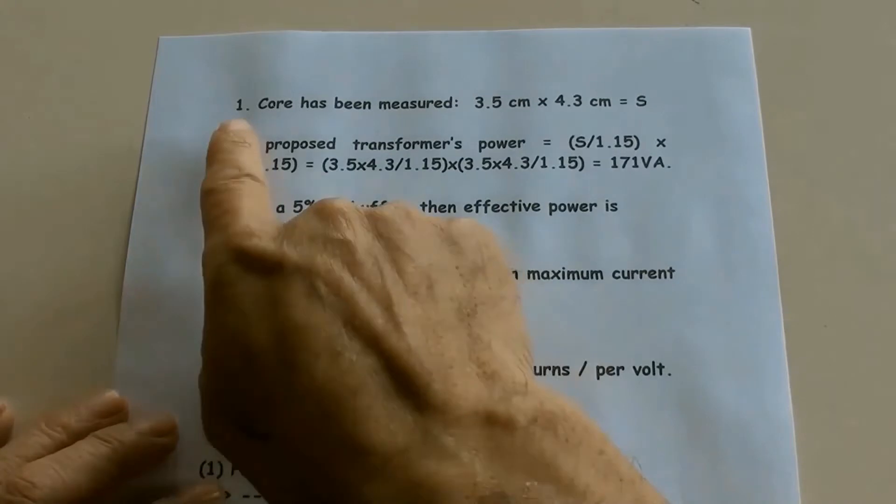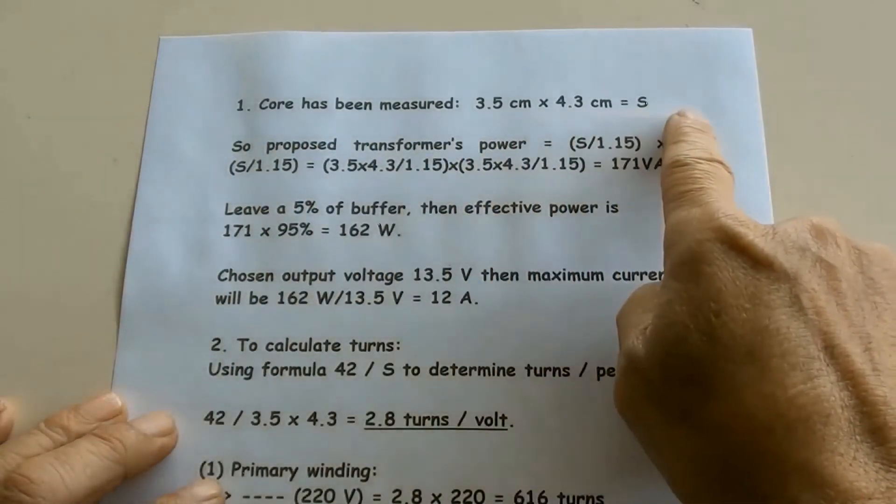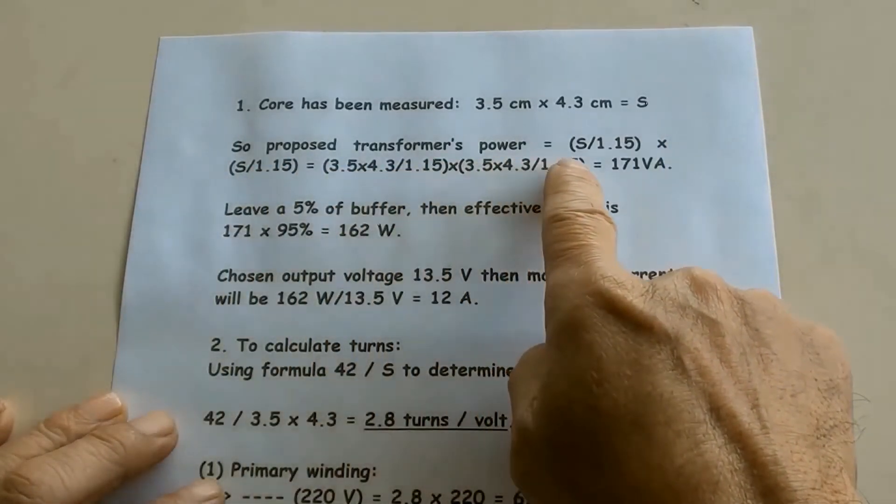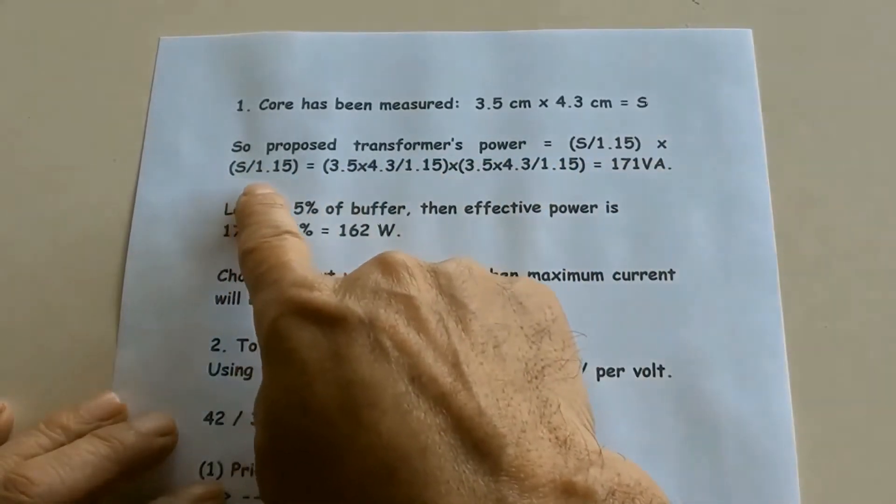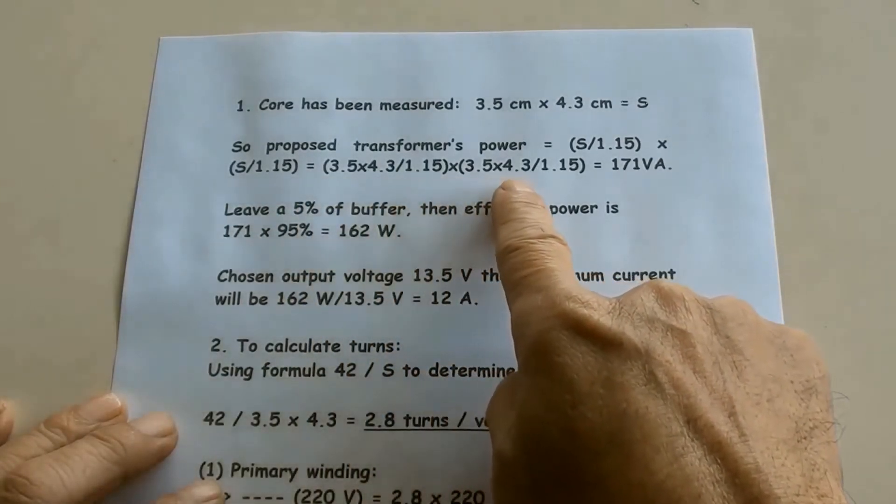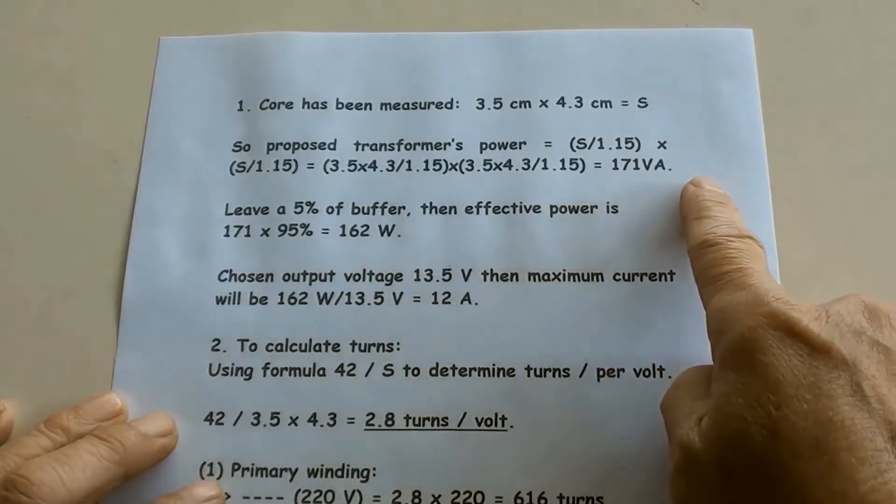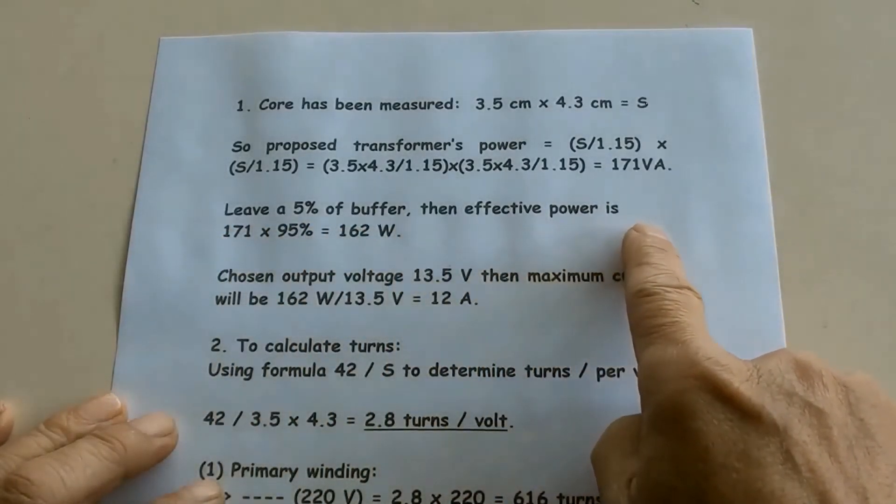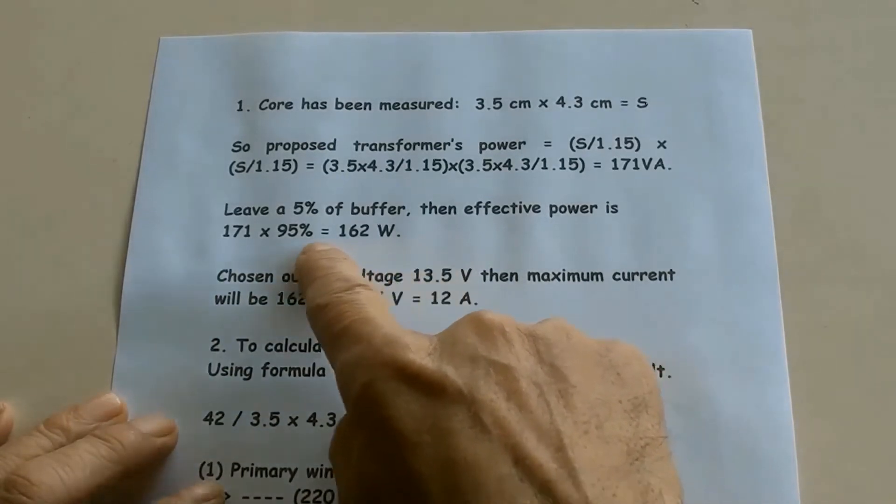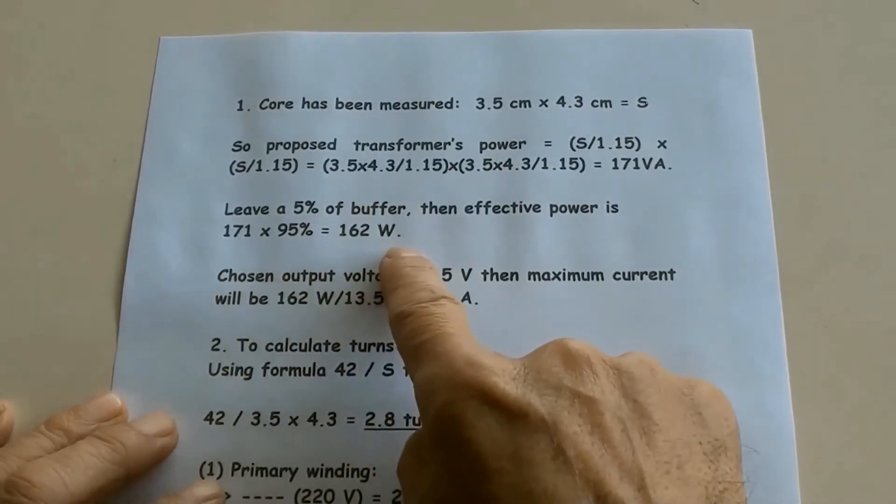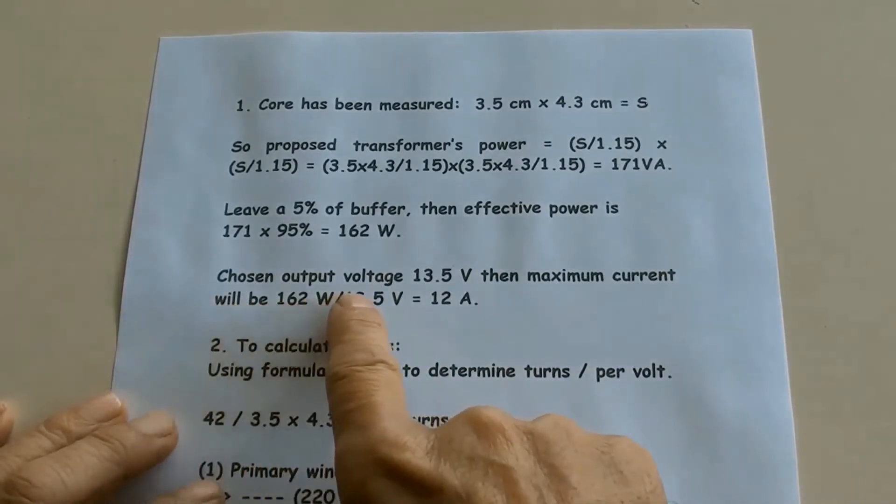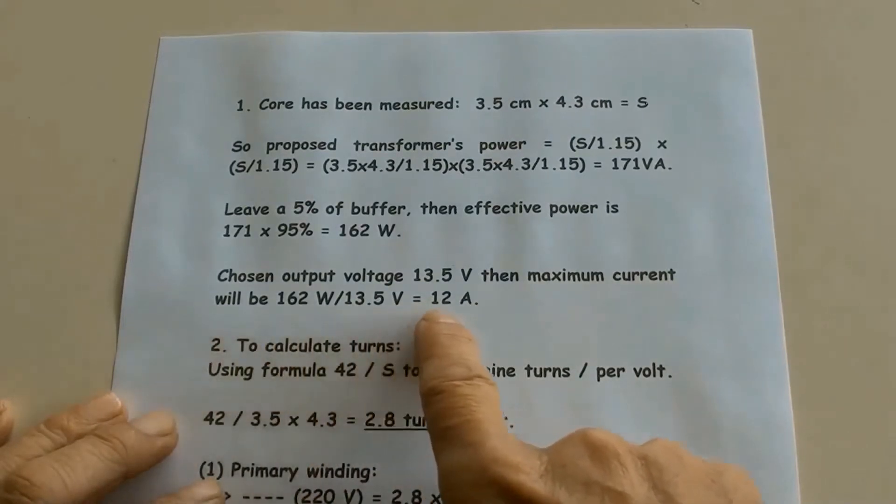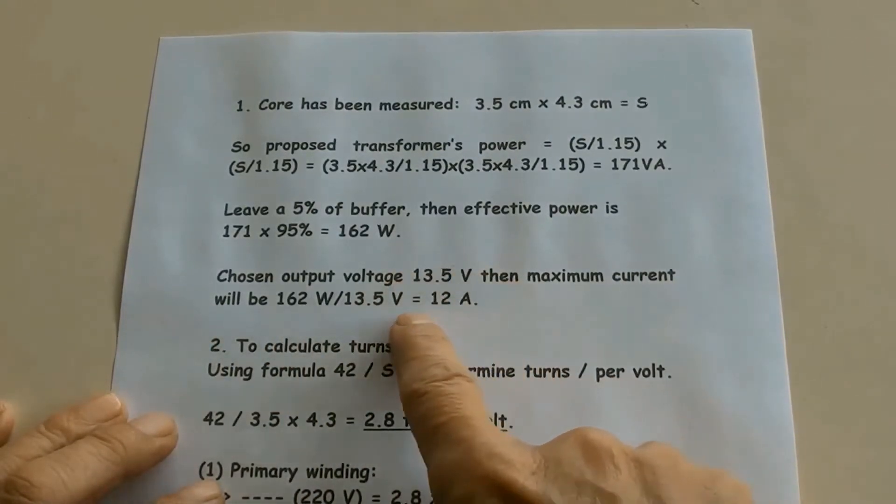The core size was measured: 4.3 cm times 3.5 cm equals S, which represents core area in square centimeter. S over 1.15 square equals 3.5 times 4.3 over 1.15 times 3.5 times 4.3 over 1.15 equals 171 VA. Leave a 5% of buffer, then effective power equals 171 times 95% equals 162 W. Chosen output voltage of 13.5 V, then maximum current will be 162 W over 13.5 V equals 12 A.